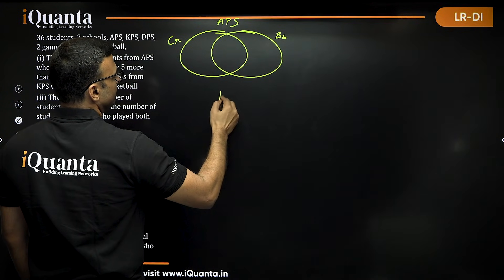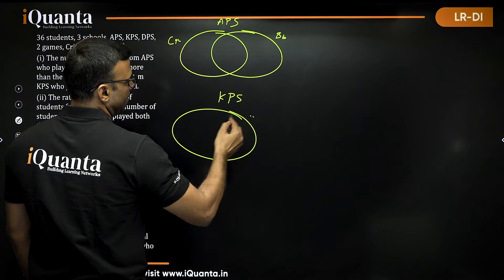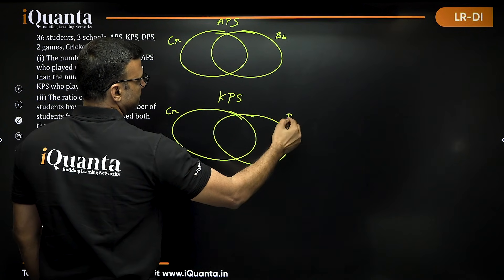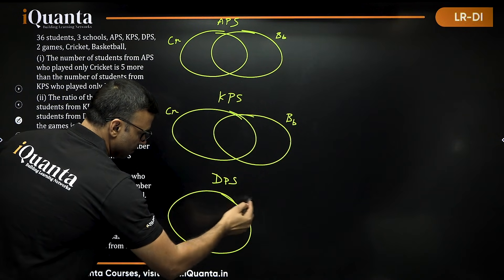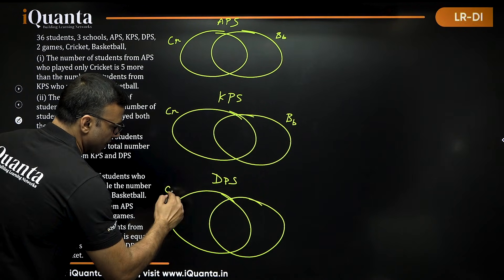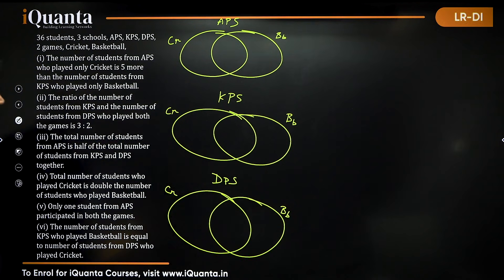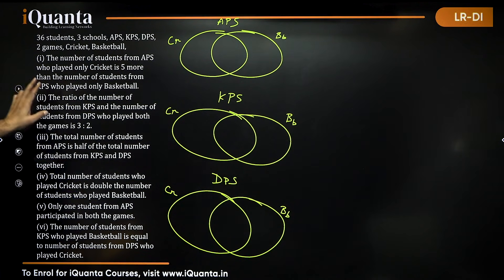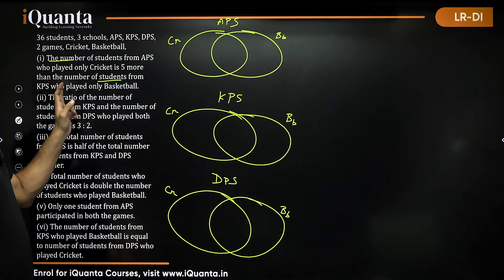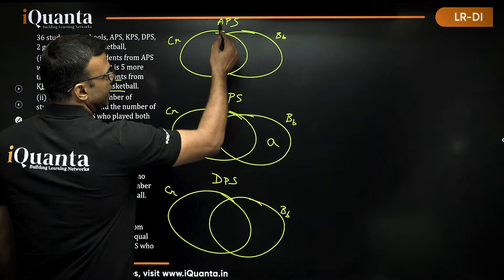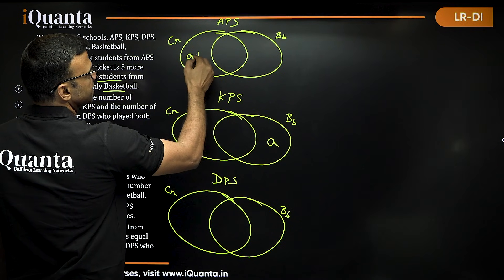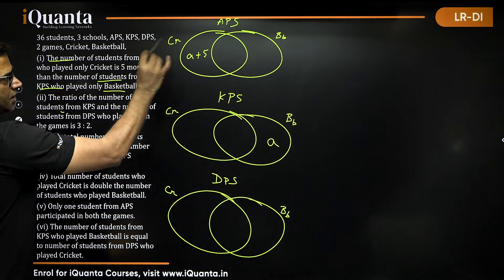Then KPS cricket, basketball, and then we have DPS. Be careful of their positioning so that you do not make any mistake — cricket and basketball. So we have given the names and the diagram: APS, KPS, DPS. The number of students from APS who played only cricket is 5 more than the number of students from KPS who played only basketball. So if KPS only basketball is A, then APS only cricket will be A plus 5.